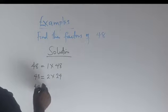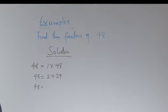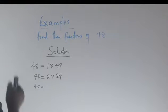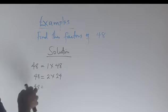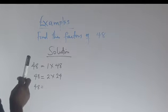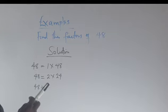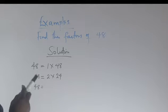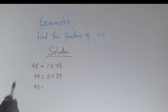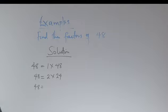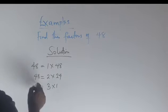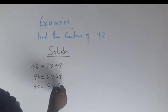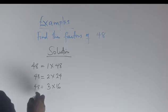Can 3 divide 48? As we learned earlier, a number is divisible by 3 if the sum of its digits gives a multiple of 3. So 4 plus 8 gives us 12, which means 48 is divisible by 3. So 3 multiplied by 16 gives us 48.